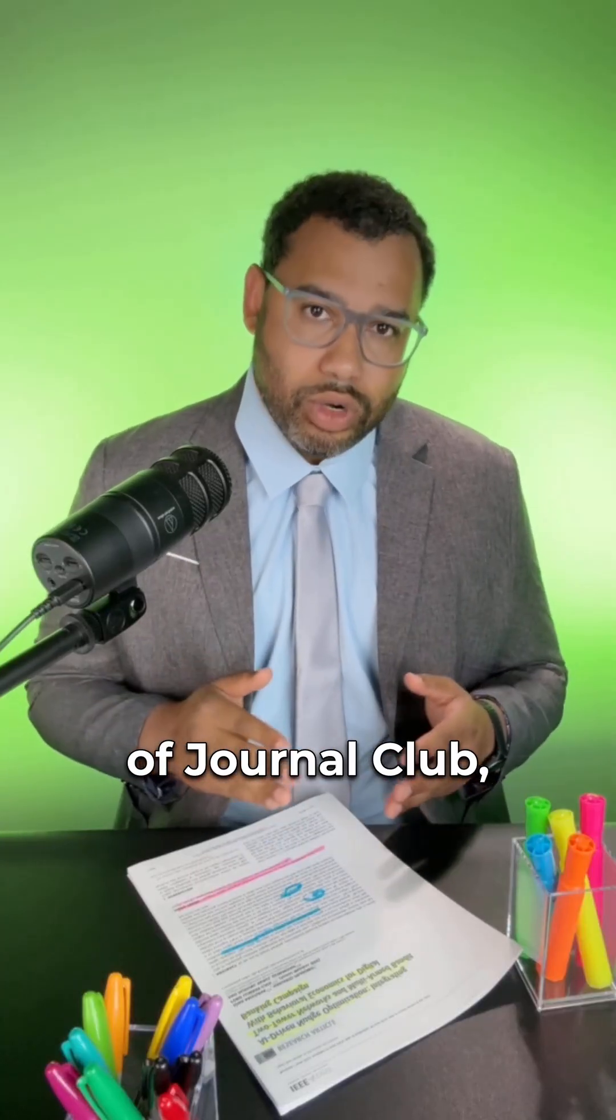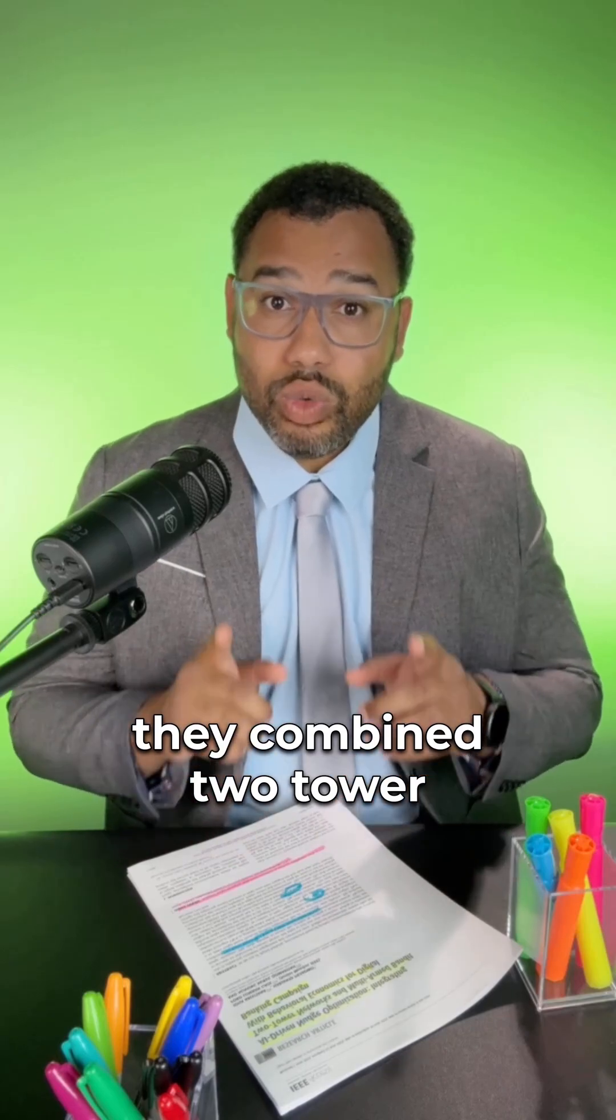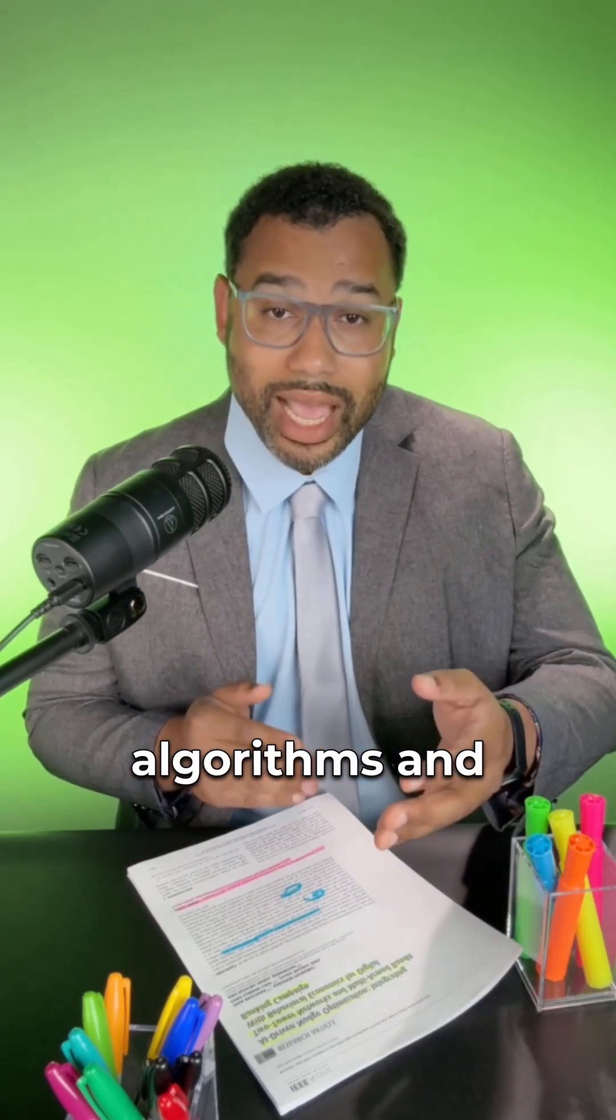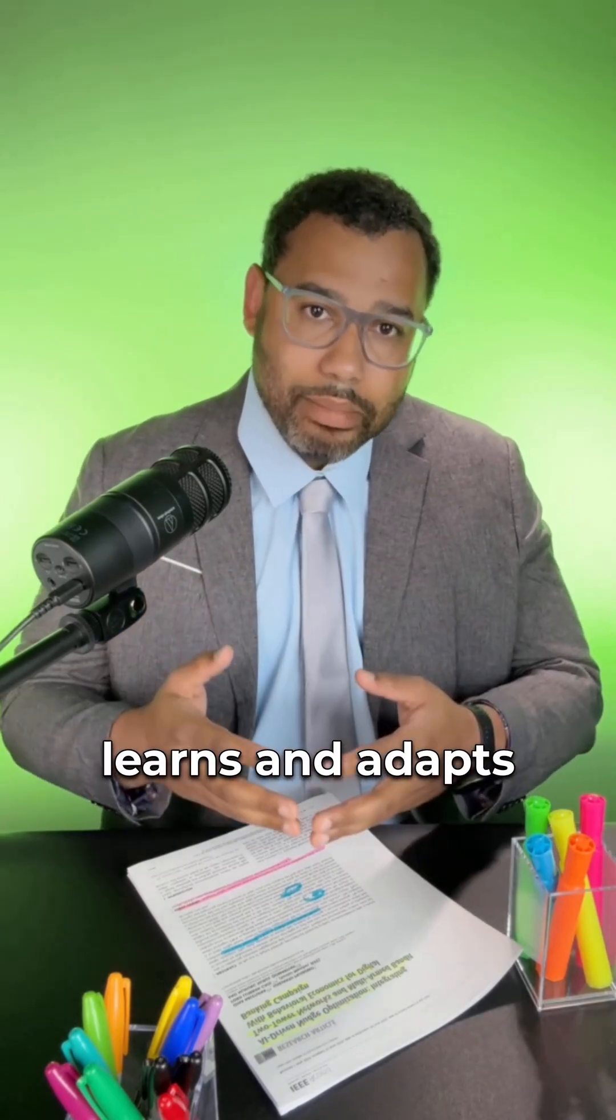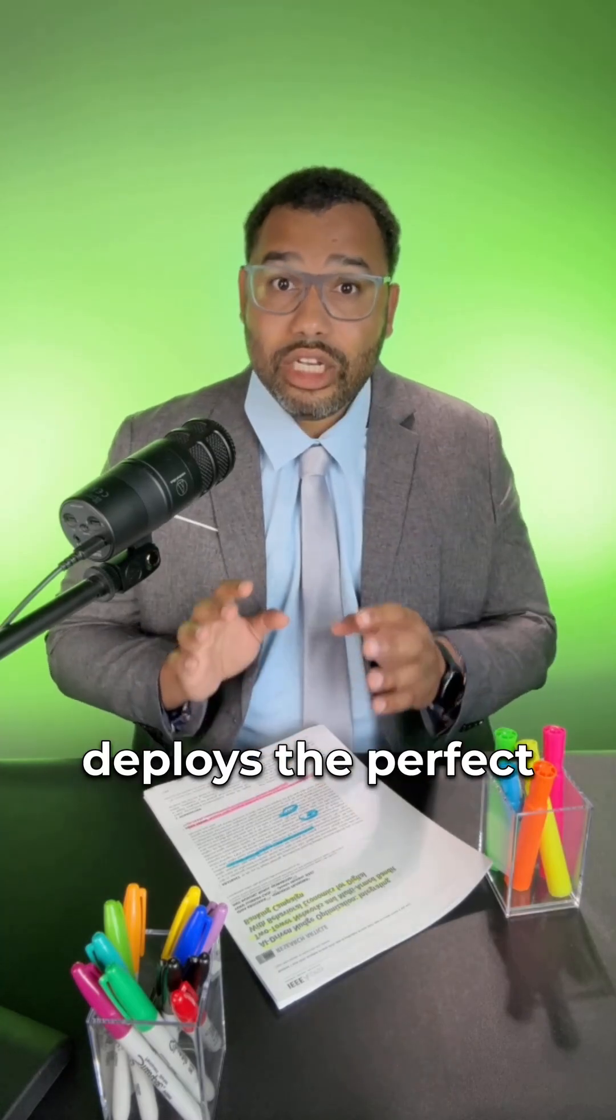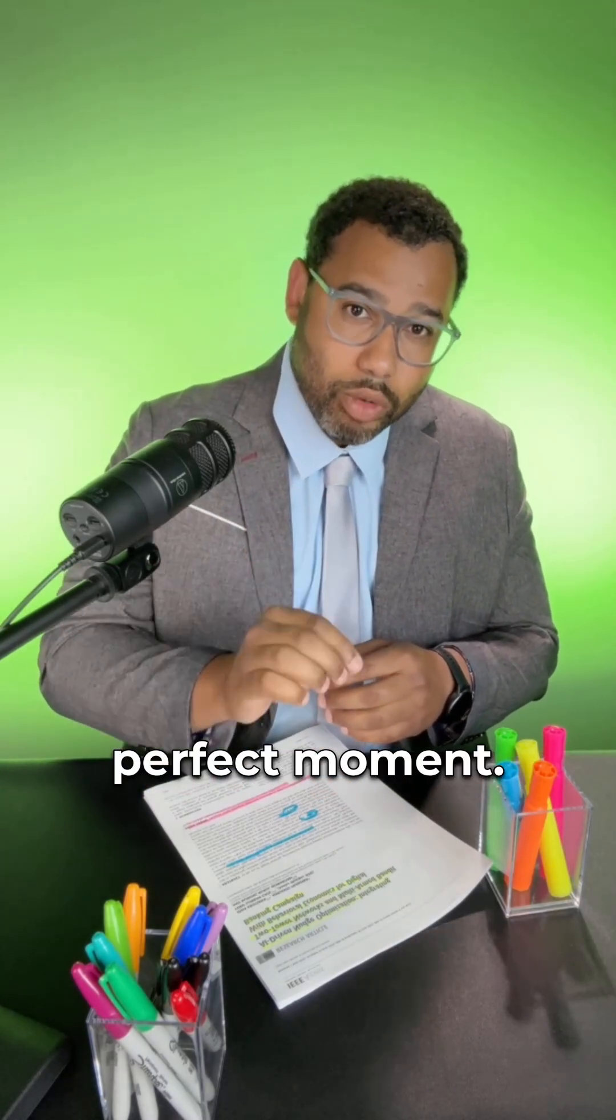On today's episode of Journal Club, we're going to walk through how they did it. We'll see how they combined two tower neural networks with multi-armed bandit algorithms and synthesized them into a system that learns and adapts in real time. A system that continuously crafts, reformulates, and deploys the perfect nudge at the perfect moment.